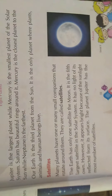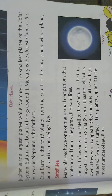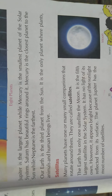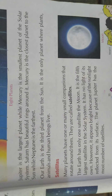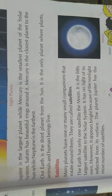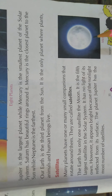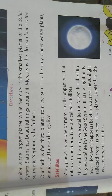The next topic is satellites. I want to give you some information about satellites. Basically, satellites are of two types: the first is natural satellite and the second is artificial satellite. Artificial satellite means the satellite which is created by humans.